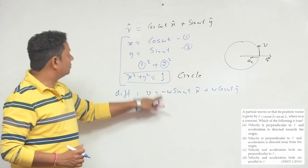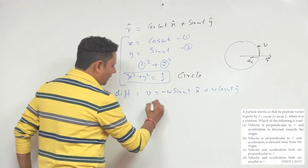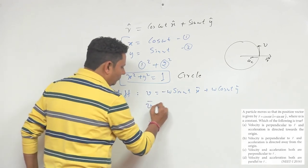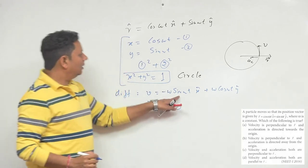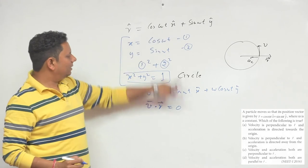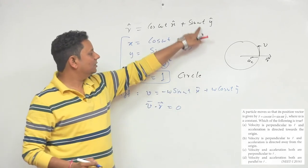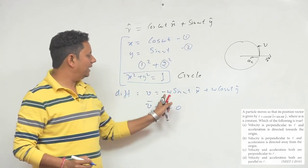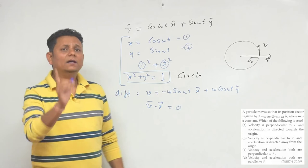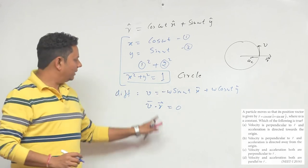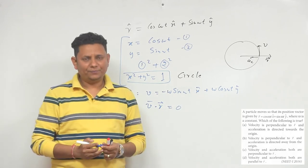Now if we compute the dot product v · r, the terms give us −ω sin(ωt)cos(ωt) + ω cos(ωt)sin(ωt), which equals zero. This confirms that the angle between v and r is 90 degrees — they are perpendicular.